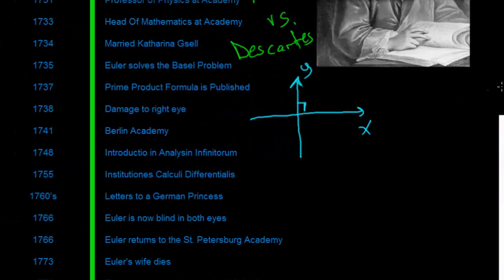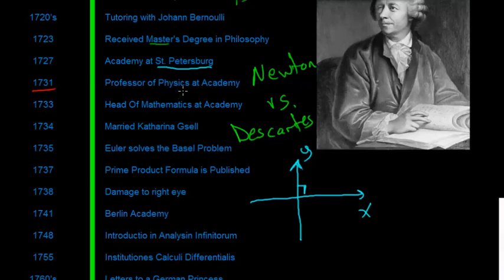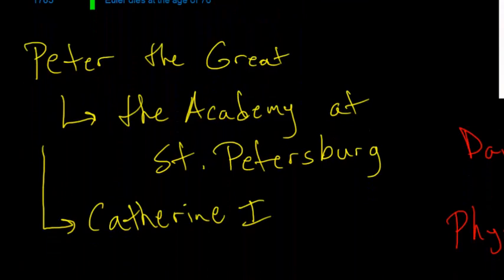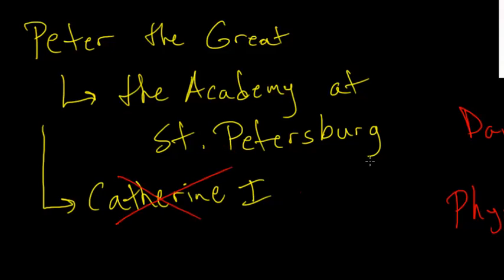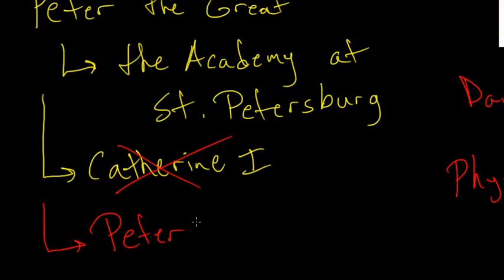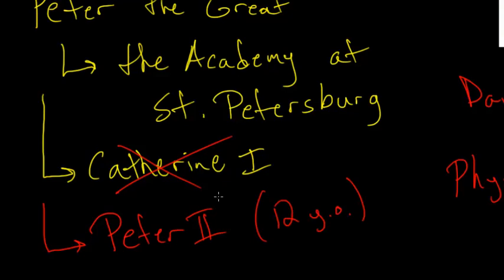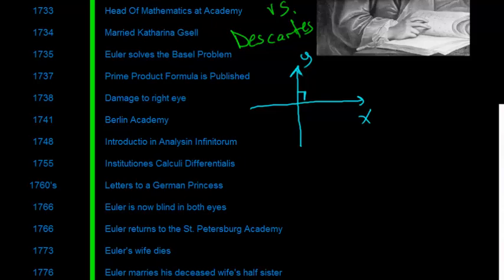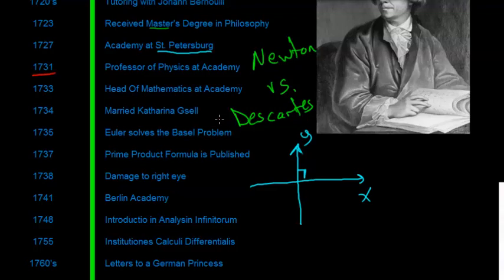Going back to the timeline: it wasn't until 1731 that Euler finally becomes a professor of physics at the academy. In 1733, Daniel Bernoulli decides to leave the academy, and Euler becomes head of mathematics. When Euler had arrived, Catherine I died right away, and Peter II — who was only 12 years old — succeeded her. Russia fell into turmoil; it continually got worse, Peter II died, and during that period Daniel left, leaving Euler as head of mathematics.